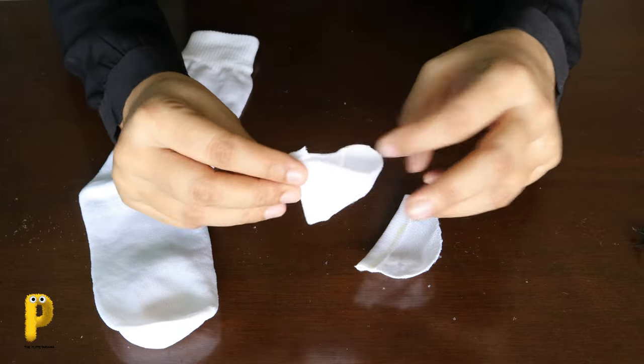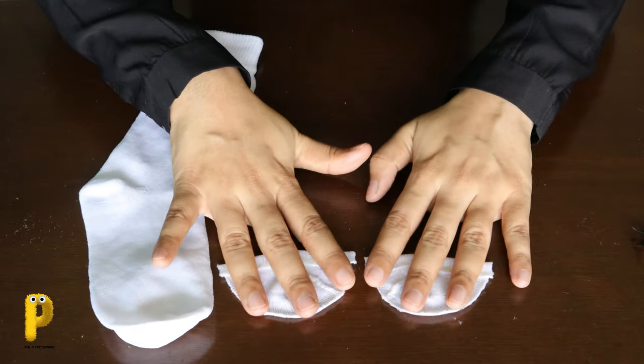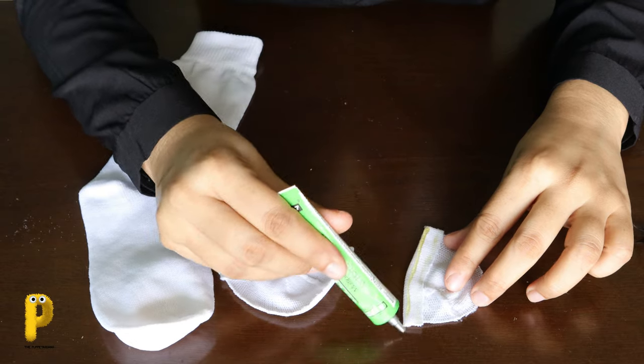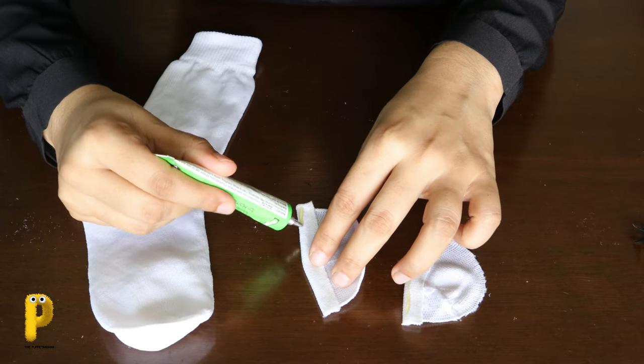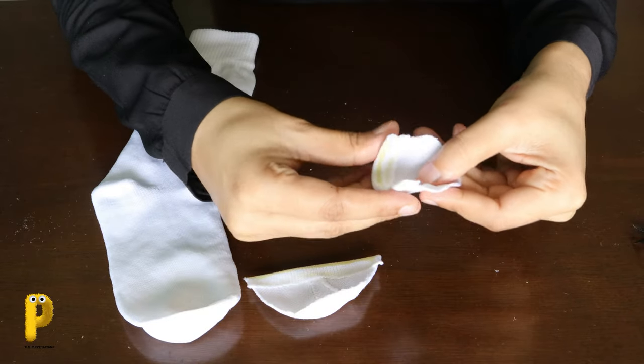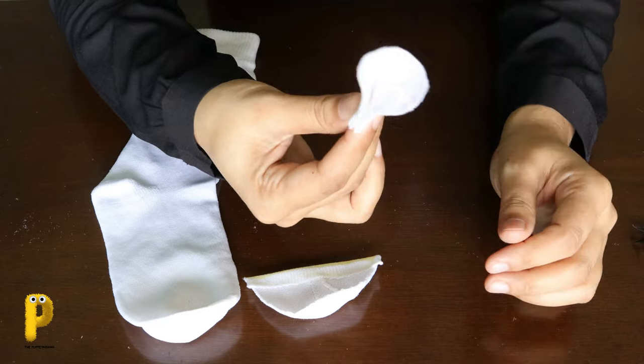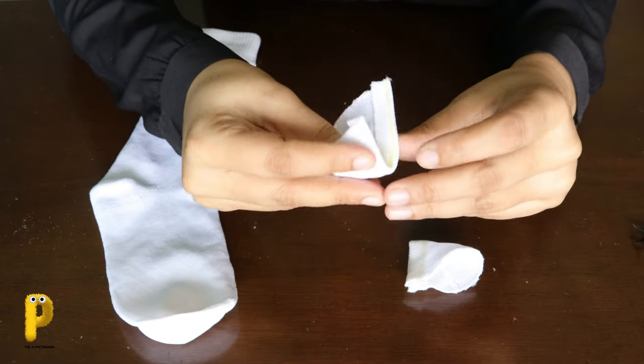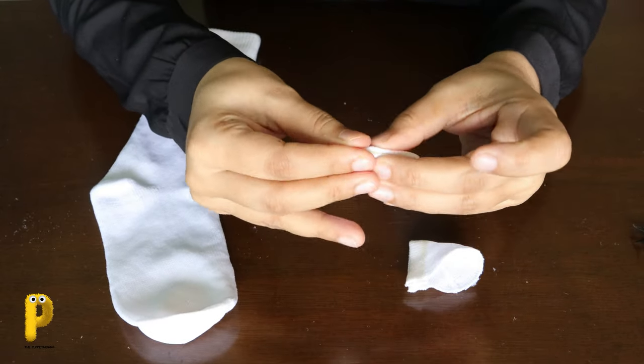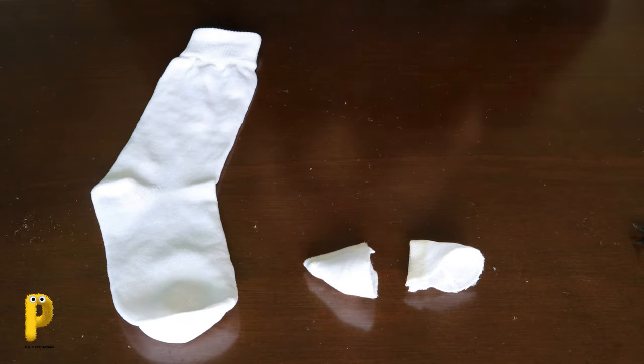We are going to stick the bottom part like this. So put some glue again on the bottom. And pinch the ears like this. Here we go. Our ears are ready too. Now let's give it some shading.